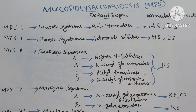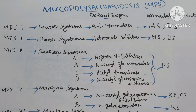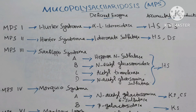MPS3, Sanfilippo syndrome. Subtypes A, B, C, D. Type A is due to the deficiency of the enzyme heparin sulfatase. Type B enzyme is N-acetylglucosaminidase. Type C is acetyltransferase. Type D is N-acetylglucosamine 6-sulfatase. The accumulative product for all subtypes is heparin sulfate.